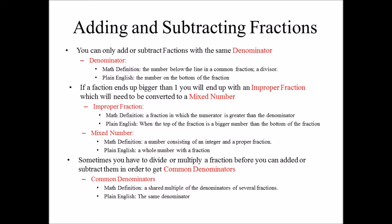For example, one-fourth plus two-fourths — yes, you can add those. But one-fourth and one-third — no, you can't. If a fraction ends up bigger than one, you have an improper fraction, which would be converted to a mixed number. An improper fraction would be like five over three, because the top number is bigger than the bottom. A mixed number would be like one and a half — a whole number and a fraction together. Sometimes you have to reduce a fraction or make it bigger.